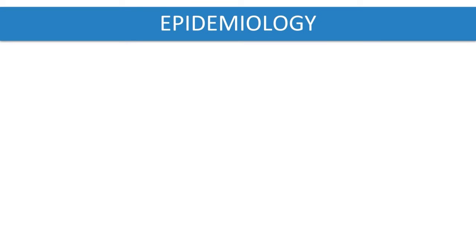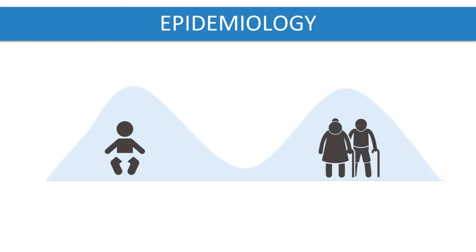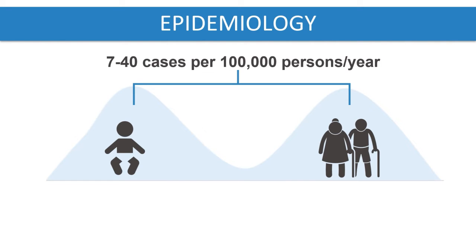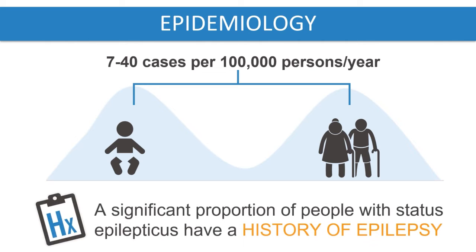Status Epilepticus has a bimodal age distribution, with peaks in infancy and in the elderly. Incidence rates range between 7 to 40 cases per 100,000 persons per year. A significant proportion of both children and adults with Status Epilepticus have a history of epilepsy.